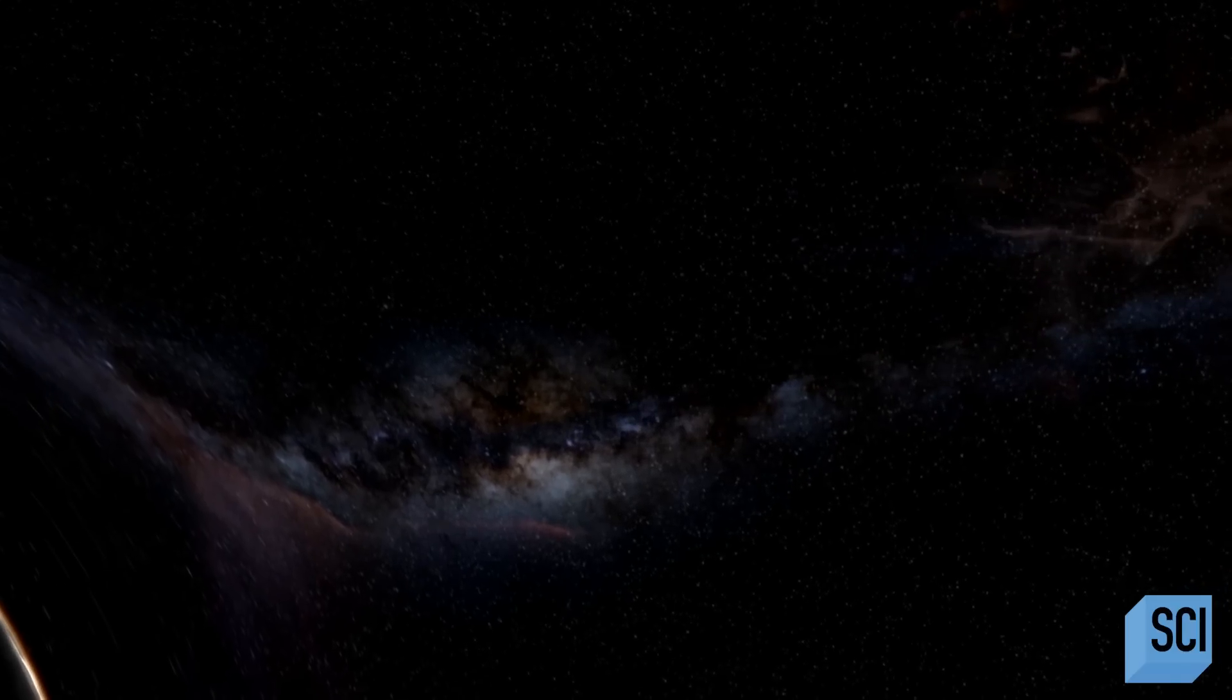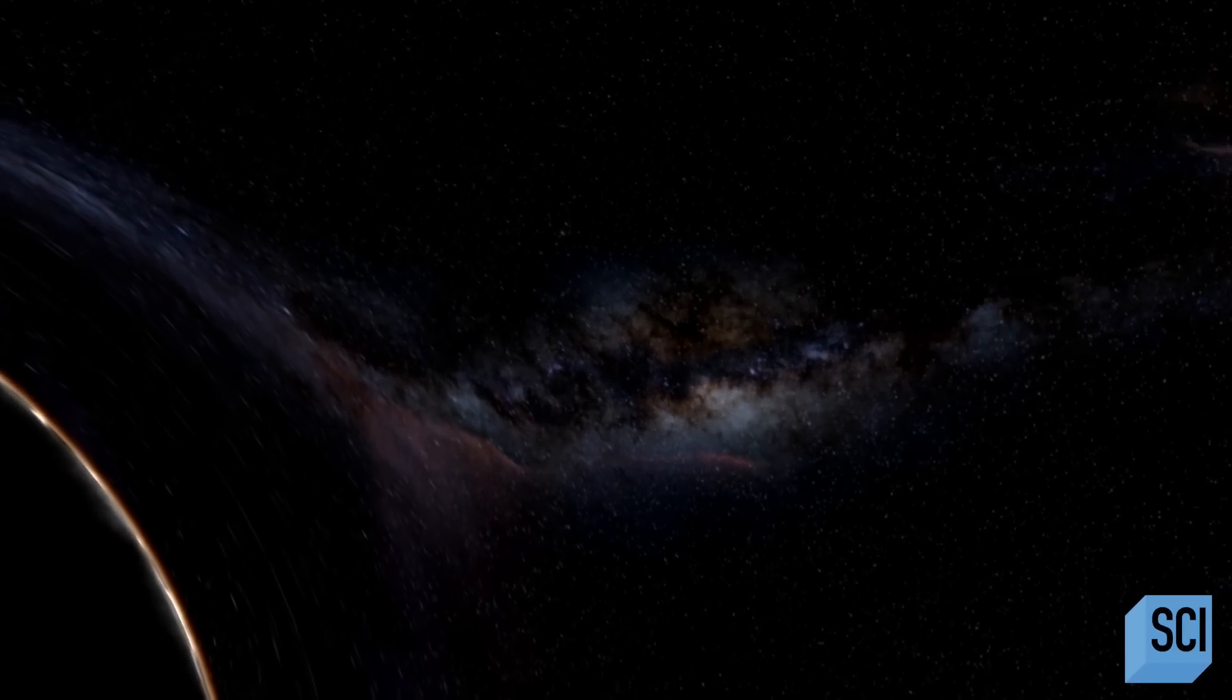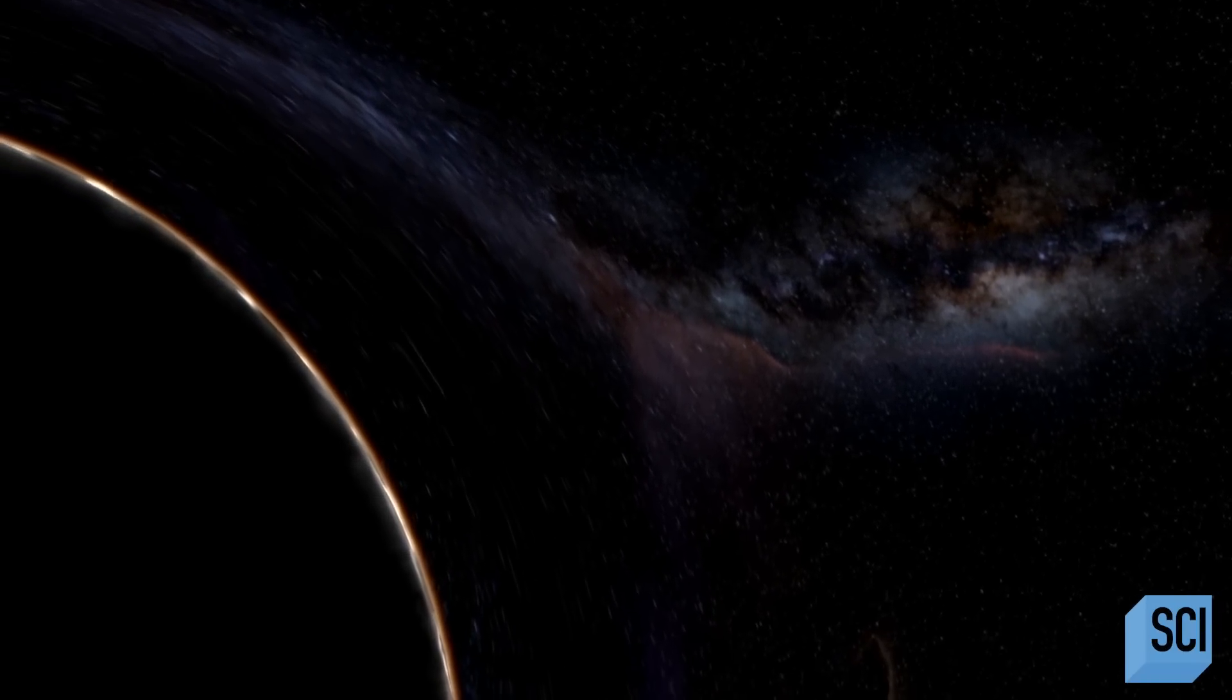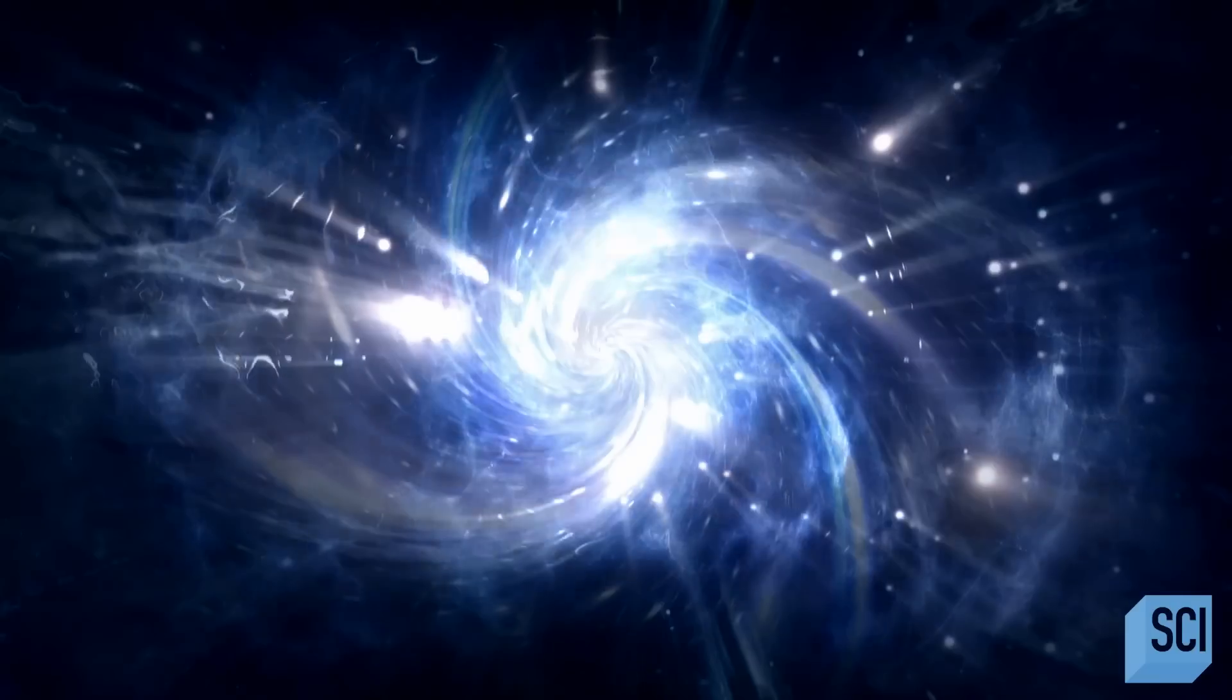The event horizon in many ways cuts a black hole off from the rest of the universe. Whatever comes in can never come back out. It's almost like an invisible line in space. It's not until you try to turn around and leave that you realize you're never going to escape.